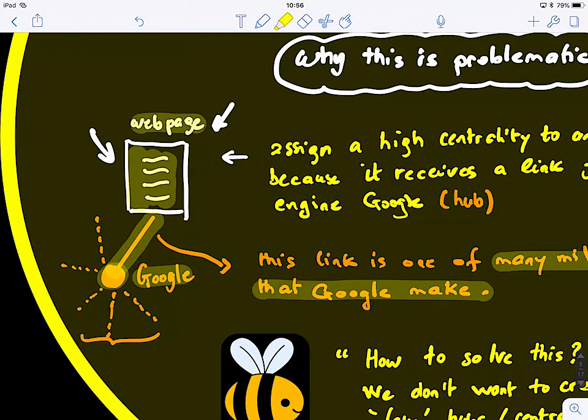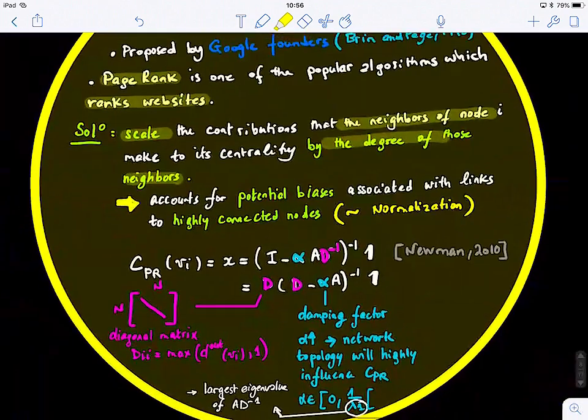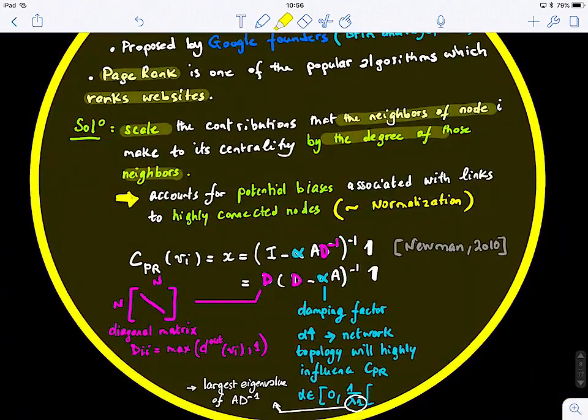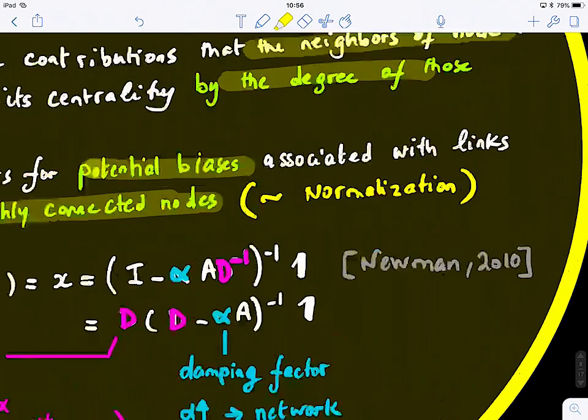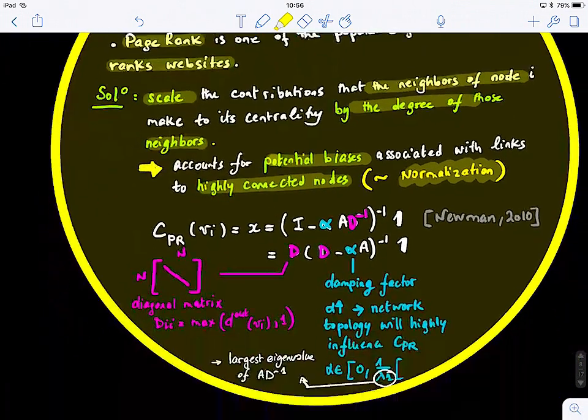To kind of normalize that and take into account the other connections, not the one connection to a single hub node that might influence the whole definition of centrality for that node. So, this is basically it allows to account for potential biases associated with links to highly connected nodes. So, you guys can think of this as a normalization process. So, it's quite simple.